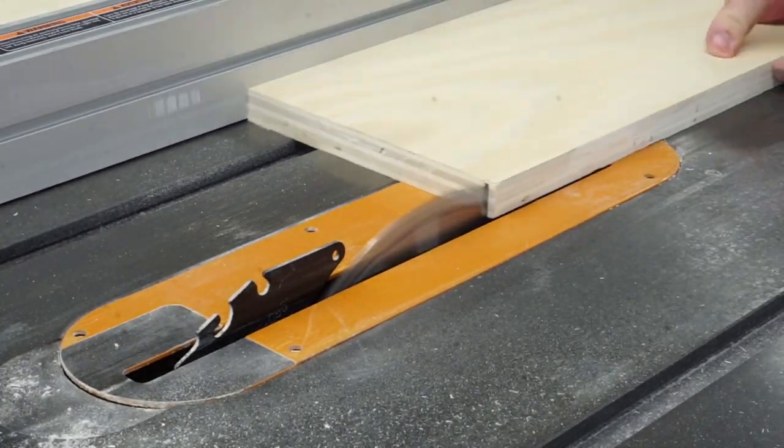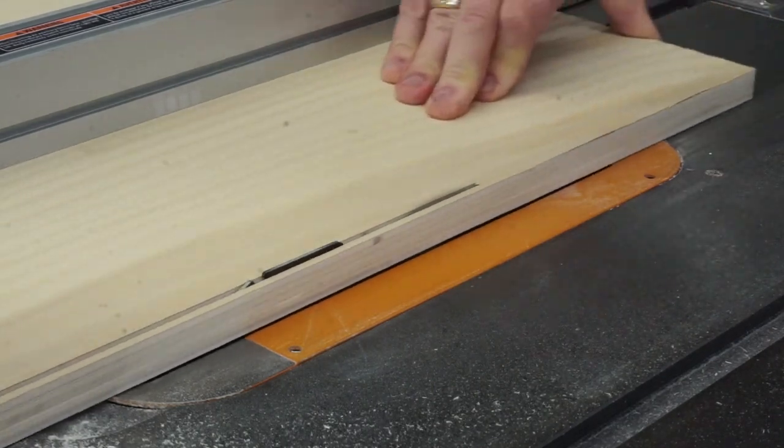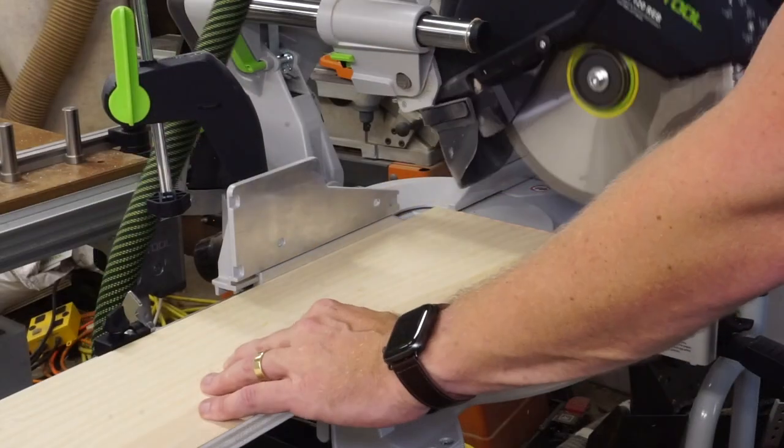I ripped the pieces through rough dimension at the table saw and then made some adjustments to rip them to final width. Everything was cut to final length on the miter saw.